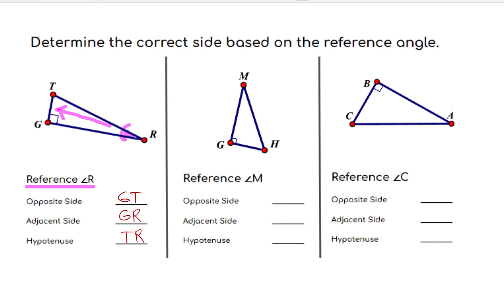Example number two, the reference angle is M. Opposite to M is segment GH or HG. Adjacent side is segment GM or MG. While hypotenuse is segment MH or HM.